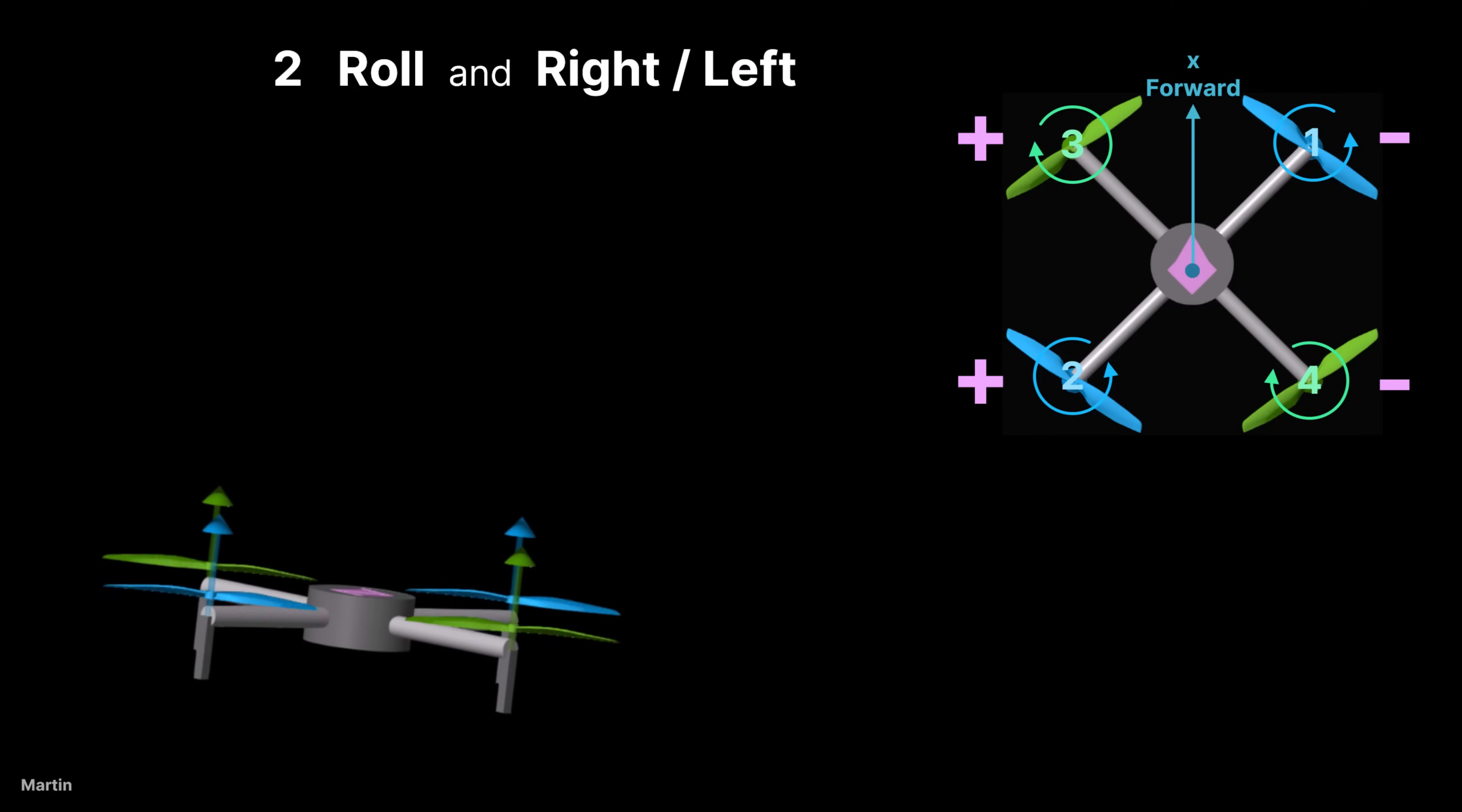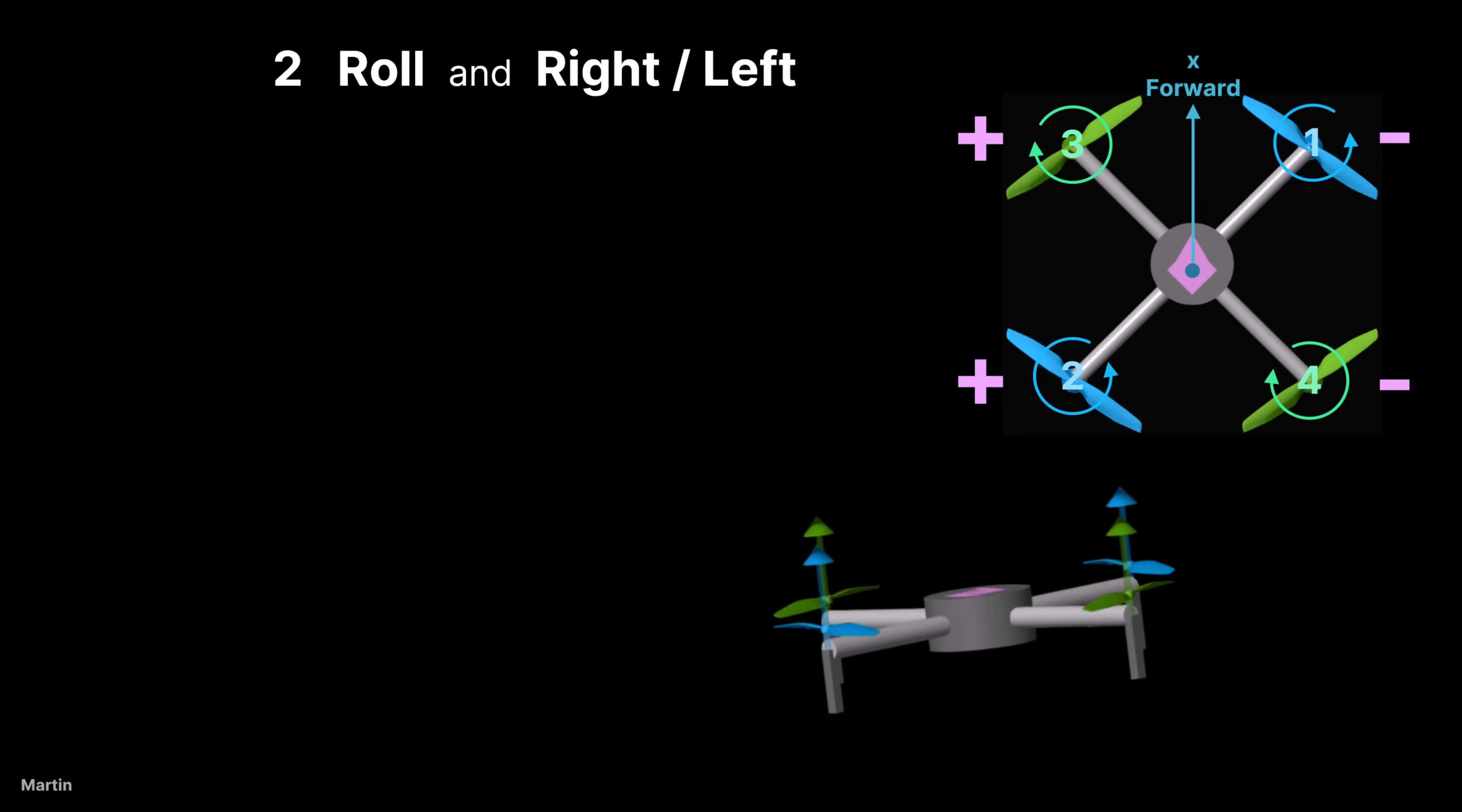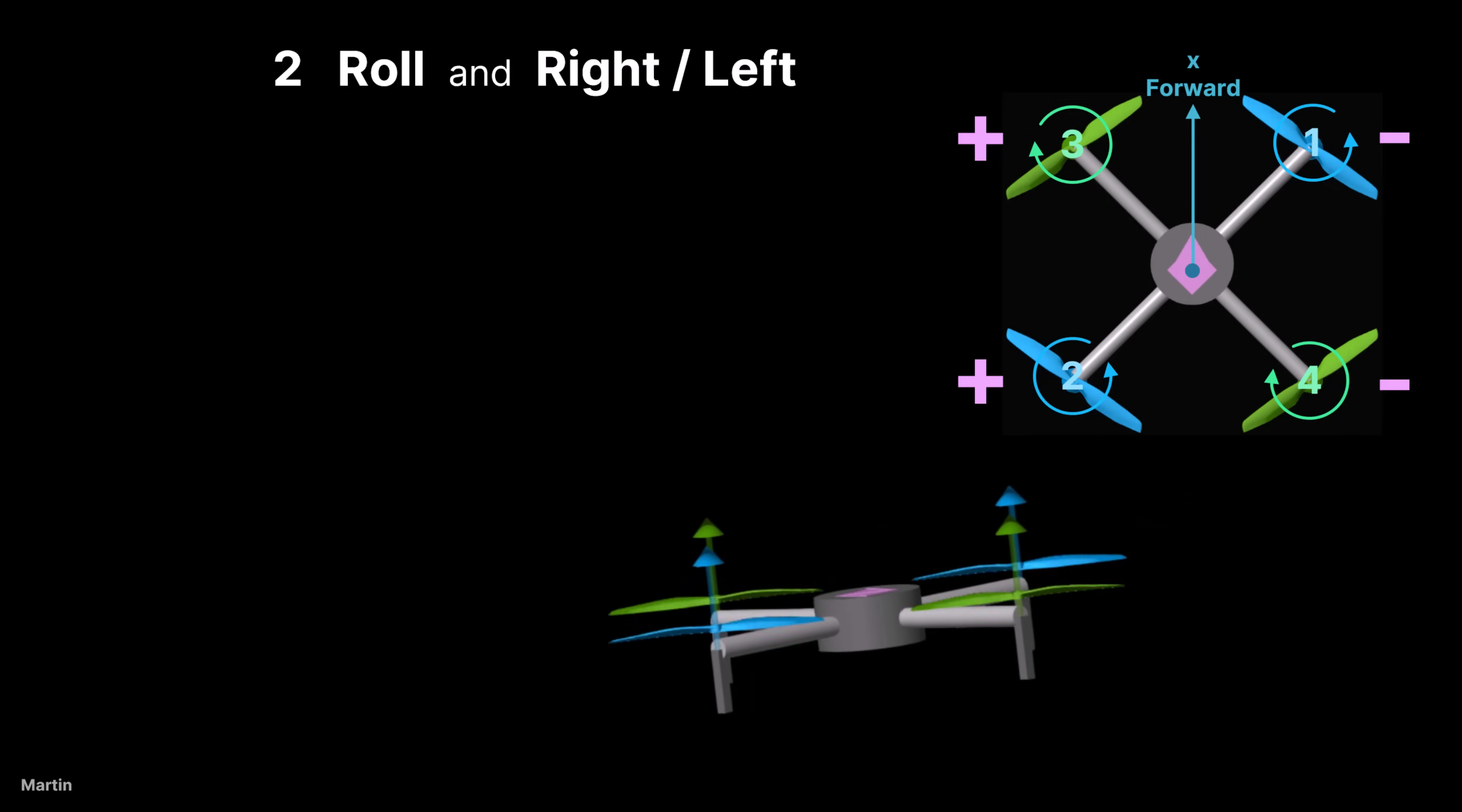To control the quadcopter to roll right, increase the speed of the left-side propellers and decrease the speed of the right-side propellers. To roll left, do the opposite.